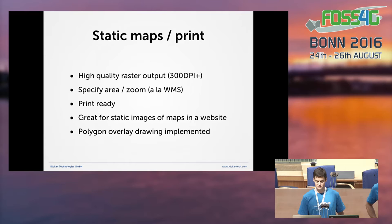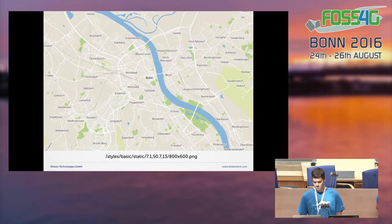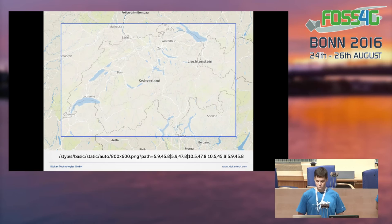You can easily produce high-quality raster images from the static maps endpoint just by specifying the map center and zoom level in the URL. You can even overlay a polygon by adding some parameters to the URL. This is great for displaying static images on the web if you need to visualize some area.